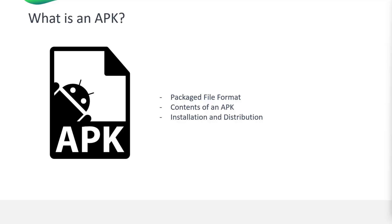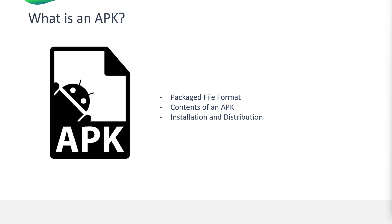Now let's move into the APK. An APK file is essentially a ZIP file containing all the necessary files for an Android application to run, which includes code, resources, assets, and the manifest file. APK stands for Android Package Kit — the format used for distributing and installing applications on Android. APKs are used to install applications on Android devices, similar to how .exe files are used on Windows.